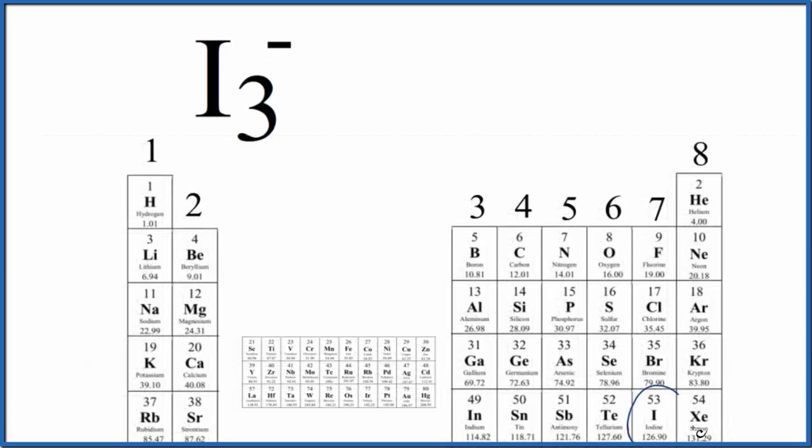So we find iodine, that's right here. It's in group 17, sometimes called 7A. All of these have seven valence electrons. We have three iodine atoms. In this negative, that means we have an extra negative charge, an extra electron.